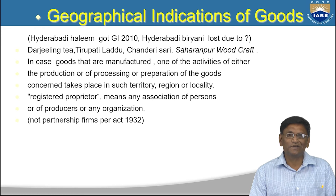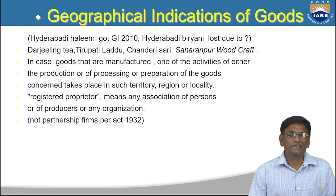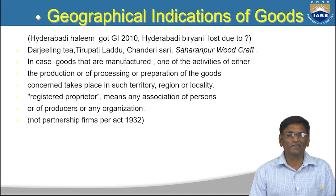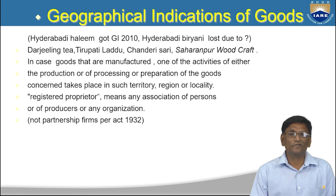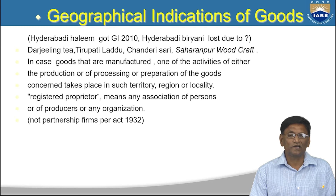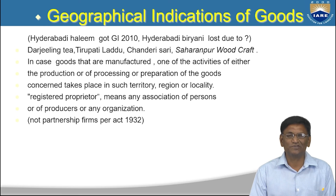Hyderabadi Biryani was refused a GI because by the time the claim was lodged, it was already in the public domain — being sold in Washington, Bangalore, Kolkata, and everywhere. Granting GI would require removing 'Hyderabadi' from all menu cards worldwide. The court case ran for 7 years and finally GI was refused. So Hyderabadi Biryani has no GI and can be manufactured anywhere in the world.